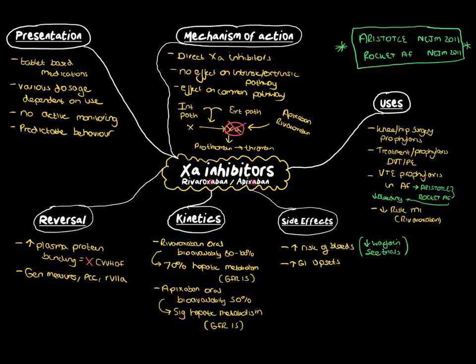Now in terms of reversing the direct factor Xa inhibitors, there is now a product on the market which has a licence for reversal of all of the factor Xa inhibitors. It's called andexanet alpha. It's essentially a recombinant decoy version of factor Xa, which has a higher binding preference to whichever factor Xa inhibitor you're using.